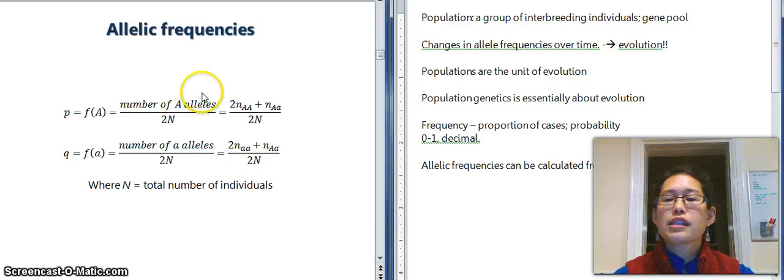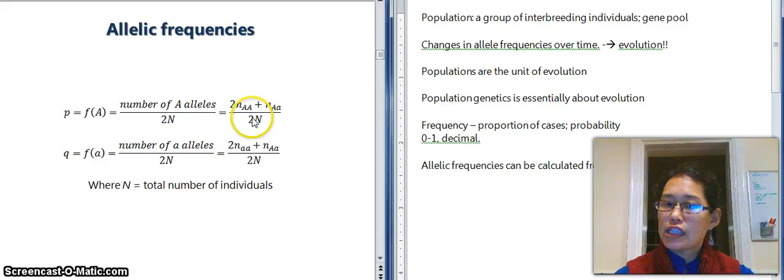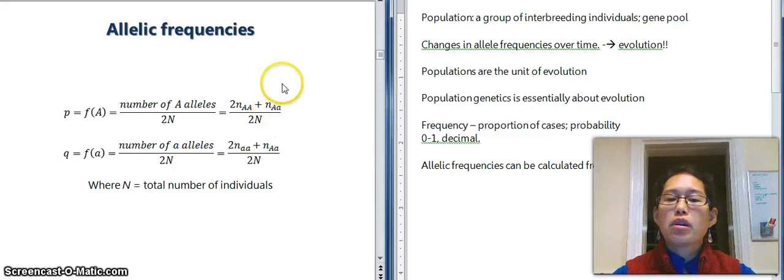All right. So, another way to think about this, using the numbers of a certain genotype, is the number of individuals with a big A, big A genotype, plus the number times two. That's important. Let's say that number of one plus the number of individuals that are heterozygous. Now, what this means is that we are counting for, let's say there's a hundred individuals.